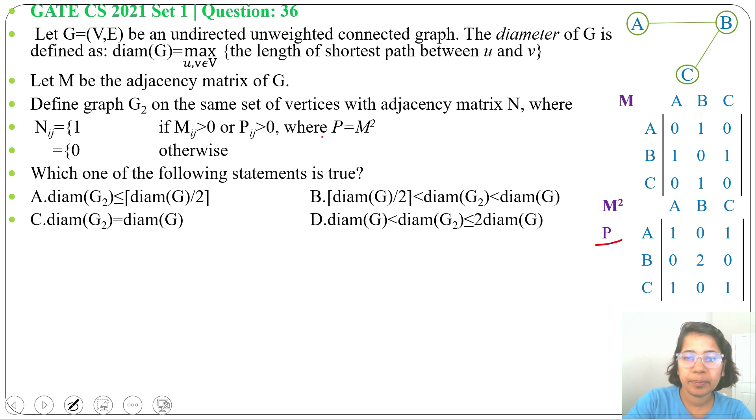This is also P as P equals M squared. Now we found M squared. Next we'll find N_ij. So we'll create another matrix N from M and M squared. This will be our matrix N. If M_ij greater than 0 or P_ij greater than 0, then it will be 1. So in first row, here this P value is greater than 0, here this M value is greater than 0, here P value is greater than 0. So first row, all are 1.